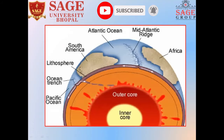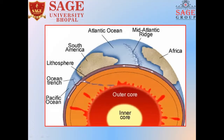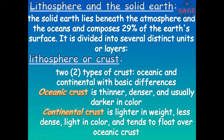This is another view of the earth's section, which shows inner core, outer core, mantle, and lithosphere, as well as the division of land and water on the earth's surface. The solid earth lies within the atmosphere and the ocean, and it composes 29 percent of earth's surface. It is further divided into several distinct units or layers.